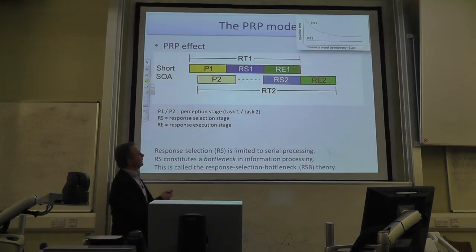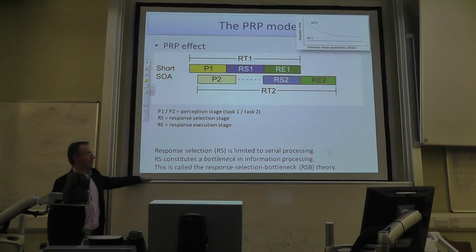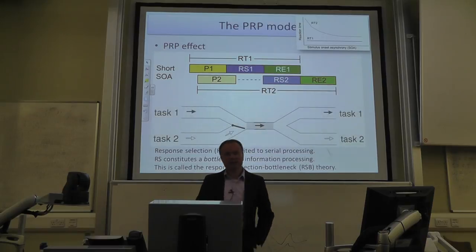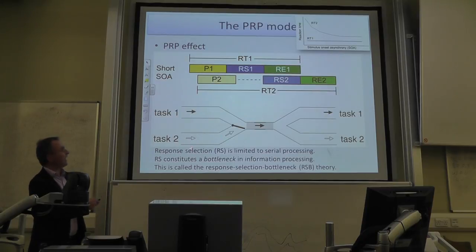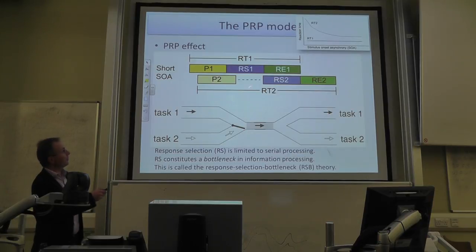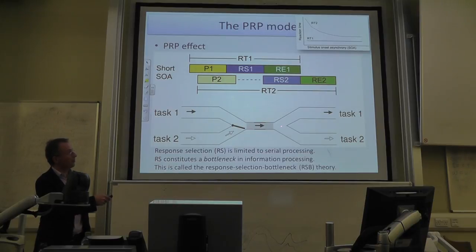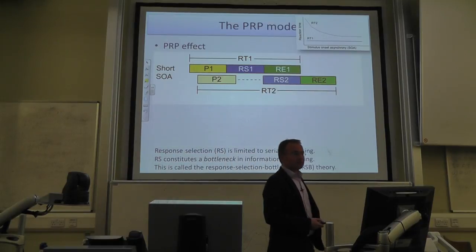If we make the SOA a little longer, it just moves to the right — response time changes by exactly the same amount. That's the reason for the slope of minus one. Any change in SOA directly results in a change in RT2, because it varies the waiting time. This only changes when the SOA becomes long enough that there is no waiting time — at which point, any further increase in SOA won't change response time to the second task. Because the response selection is the bottleneck, this is also called the response selection bottleneck theory.